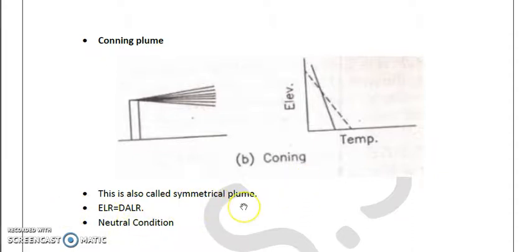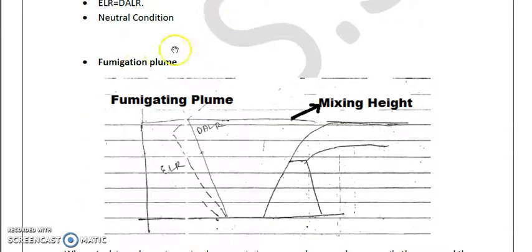Next comes the fumigation plume. In case of fumigation plume we observe that the stack is under an inversion layer, means there will be an inversion layer formed above the stack.